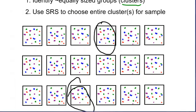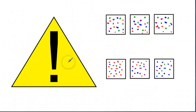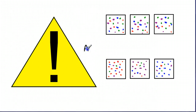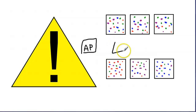Here's the problem with cluster sampling: most of the time when we have groups, they are not well mixed. We might get too many blue people or too many purple people or too many red people in a single group. If you think about classrooms, for example, you might have AP classes in one room, and then in another room you have students who are struggling to understand the material. Therefore, the groups are not well mixed, and people may have very different opinions in one class versus another.